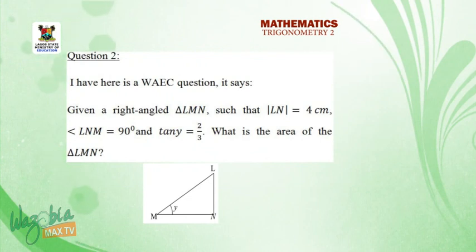Question 2 I have here is a WAEC question. It says, given a right angle triangle LMN such that side LN equals 4 cm, angle LNM equals 90 degrees, and tan Y equals 2 over 3. What is the area of the triangle LMN? Looking at the triangle that you see there, we realize that angle LMN equals to Y.